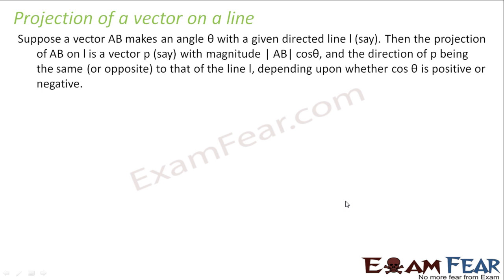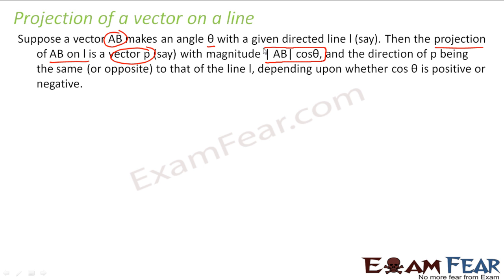If we have some vector AB which makes angle theta with some line, then we say the projection of AB on line L is a vector with some magnitude. The magnitude will be AB cos theta, and the direction will be the same or opposite to the line depending on the angle theta.